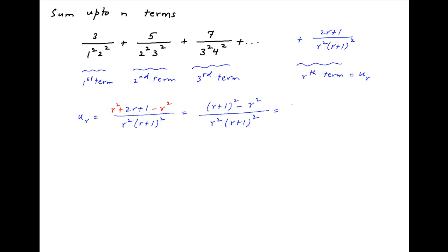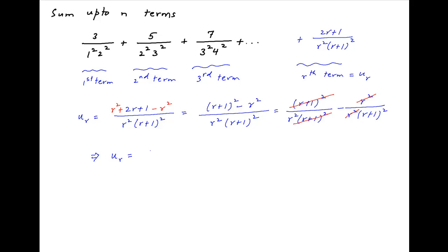This can be broken into two components. The first component is (r+1)² divided by r² times (r+1)², and the second component is minus r² divided by r² times (r+1)². (r+1)² cancels in the first term and r² cancels in the second term, and therefore ur simplifies to 1 upon r² minus 1 upon (r+1)².